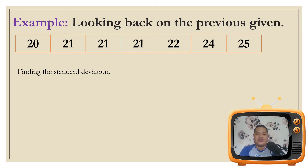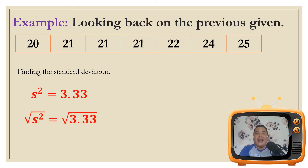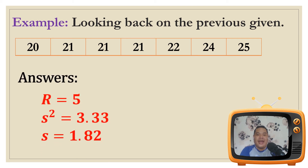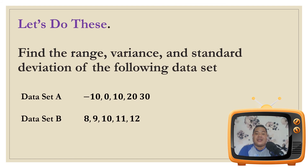To solve for the standard deviation, all we have to do is get the square root of the variance. The variance is 3.33, so extracting the root gives s equals 1.82. Therefore our answers are: range is 5, variance is 3.33, and the standard deviation is 1.82.